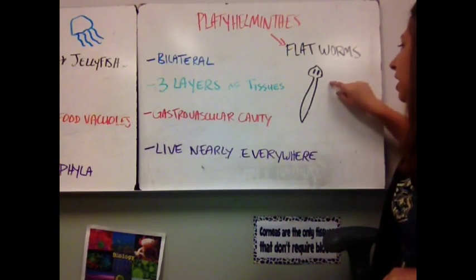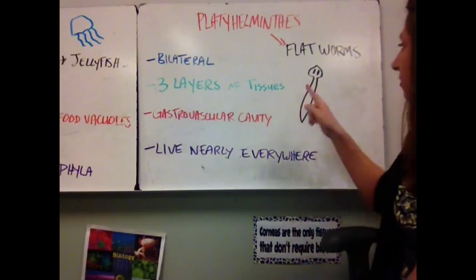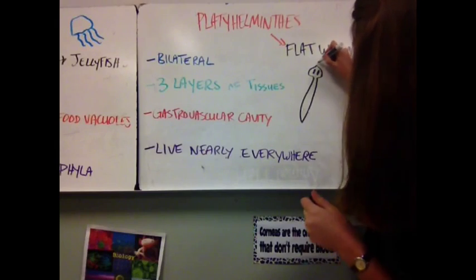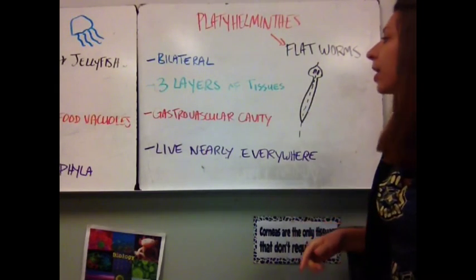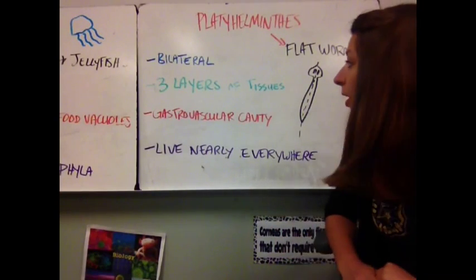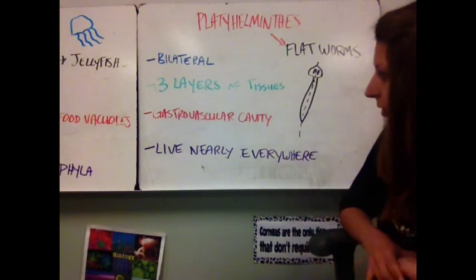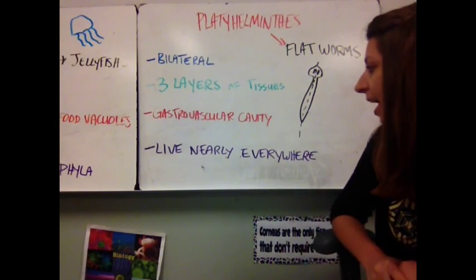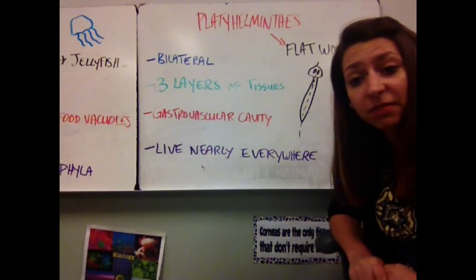Next we have the Platyhelminthes. These include our flatworms, like the planaria. These guys have bilateral symmetry — you can draw a line through them and get equal halves on either side. They have three layers of tissues: an ectoderm, an endoderm, and a mesoderm. They also have a gastrovascular cavity, and they live nearly everywhere — you see these guys all over the place.